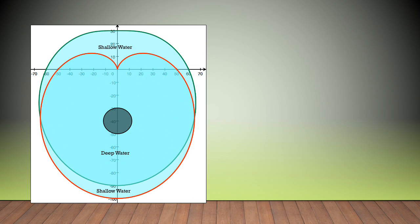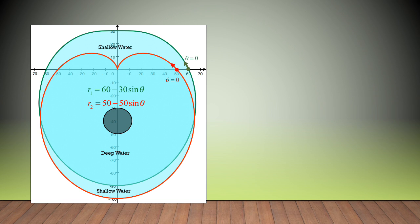In a problem of this nature, it is very important to spend some time at the beginning to fully understand how the graph is generated — where it begins when θ = 0, and the direction the graph is created. Both R1 and R2 have a sin θ term, and when θ = 0, sin θ = 0, so R1 = 60 and R2 = 50. That's their starting point. As θ gets bigger, R1 and R2 get smaller, so this graph is traced counterclockwise.